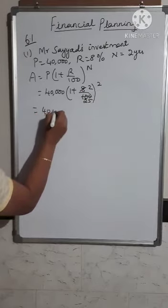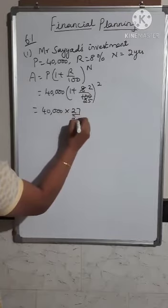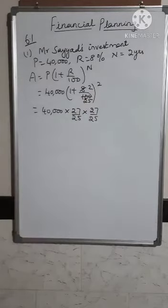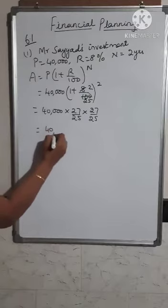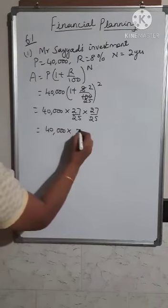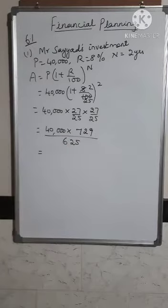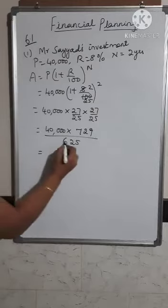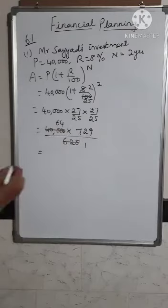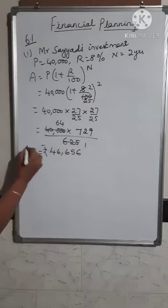Simplifying: 40,000 into (27 upon 25) squared — written twice because it is squared. This gives 40,000 into 729 upon 625. Doing the cancellation, 40,000 divided by 625 gives 64. So multiplying 64 into 729, you get the amount as rupees 46,656.